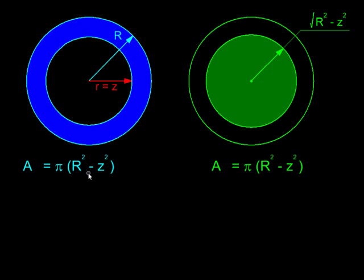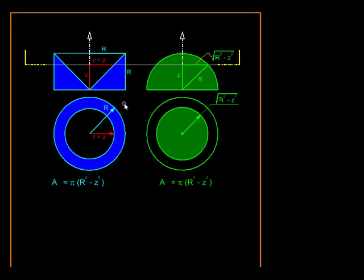we can apply Cavalieri's theorem. Because all their cross sections, all their horizontal slices are going to have identical areas. Naturally, they will have identical volumes. And finding the volume of a cylinder and a cone is something easy that we already know. But that will lead us to the volume of a hemisphere. So let's see how that goes.